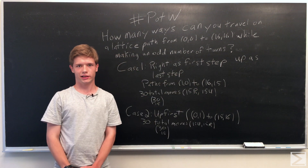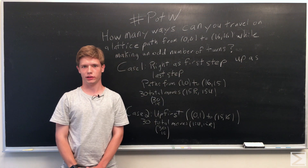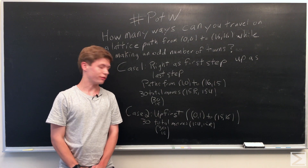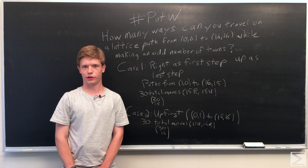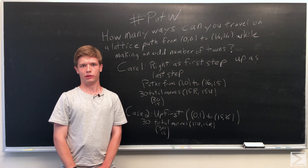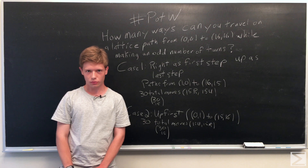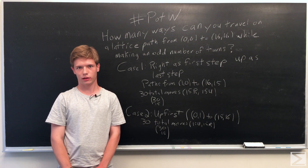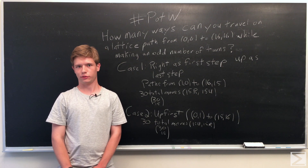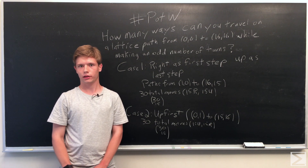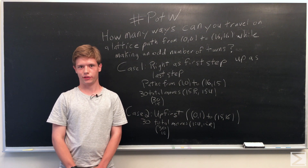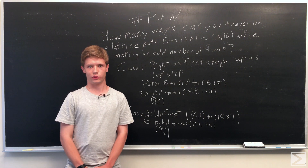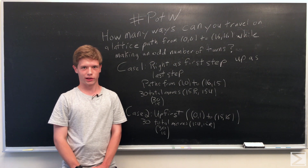The second case is pretty similar. This time we'll be going from (0,1) to (15,16), but again there will be 30 total moves to make — 15 of them up and 15 of them to the right. So the same way you count them: you pick 15 spots in which you move up out of the 30 total, giving 30 choose 15 total paths for the second case. And these are the only two cases.